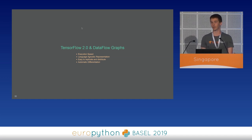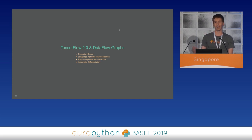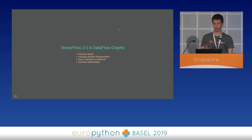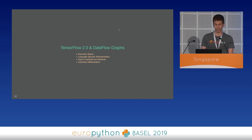Eager execution, as everyone should know, is the execution of computation line-by-line, typical of Python. This new design choice has been made with the goal of lowering the entry barriers, making TensorFlow more Pythonic and easy to use. Of course, the description of computation using dataflow graphs, proper to TensorFlow 1, has too many advantages that TensorFlow 2 must still have.